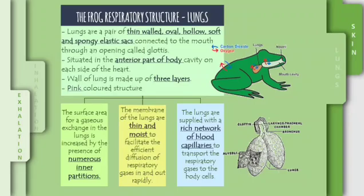Now, I'm going to talk about the frog respiratory structure — lungs. Lungs are a pair of thin-walled, oval, hollow, soft and spongy elastic sacs connected to the mouth through an opening called the glottis. They are situated in the anterior part of the body cavity on each side of the heart. The wall of the lung is made up of three layers and has a pink color structure. The surface area for gaseous exchange in the lungs is increased by the presence of numerous inner partitions. The membranes of the lungs are thin and moist to facilitate efficient diffusion of respiratory gases in and out rapidly. Lastly, the lungs are supplied with a rich network of blood capillaries to transport the respiratory gases to the body cells.